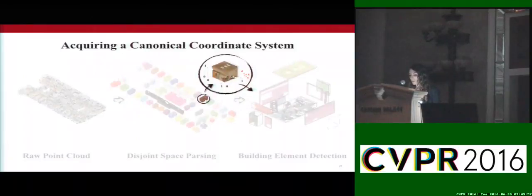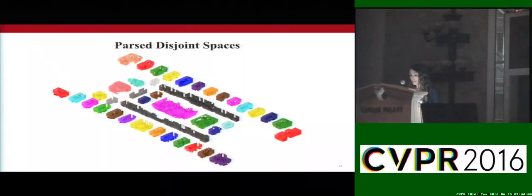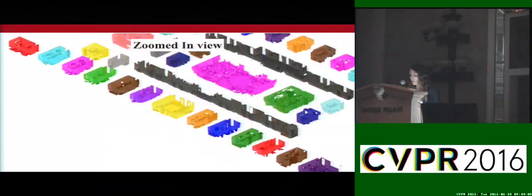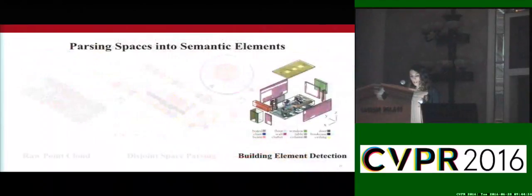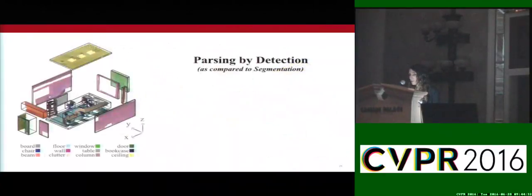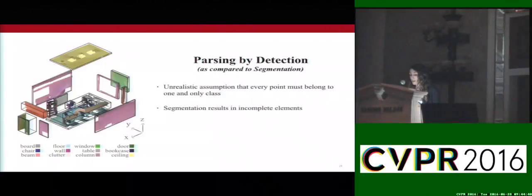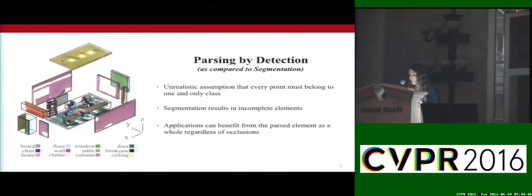As mentioned earlier, we wish to inject strong geometric priors acquired from the first step into the second step of element parsing. We observe how man-made spaces have similar layout configurations, and the location of elements within them shows repetitive patterns. To encode these regularities and extract corresponding features, we form a common reference coordinate system where we systematically align and normalize all found spaces in a unit cube. Having acquired this common reference coordinate system, we proceed to parsing each space into its 12 composing elements. We follow a parsing-by-detection strategy, mainly because it is unrealistic to assume every point must belong to only one class, because parsing by segmentation results in incomplete objects, and because most target applications benefit from a notion of the parsed element as a whole, even if partially occluded.